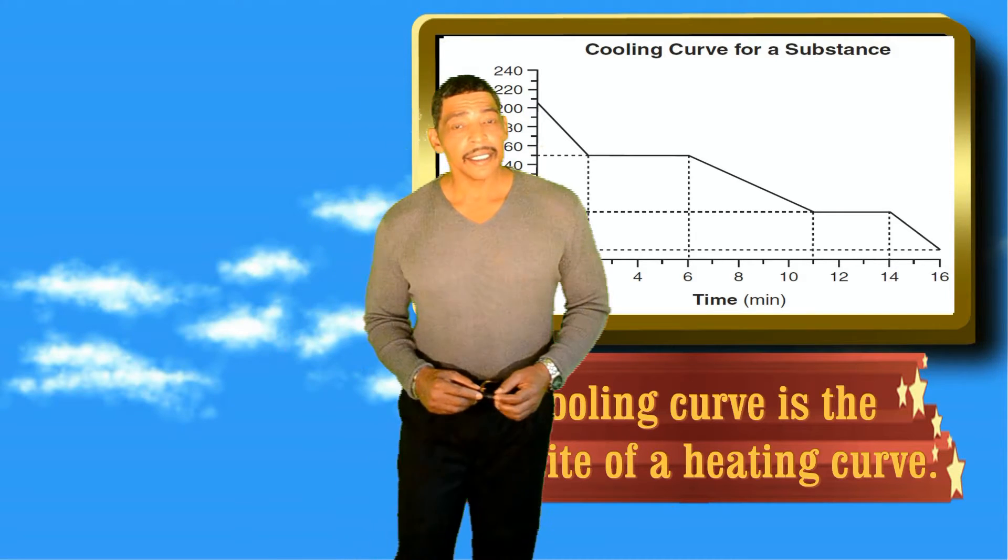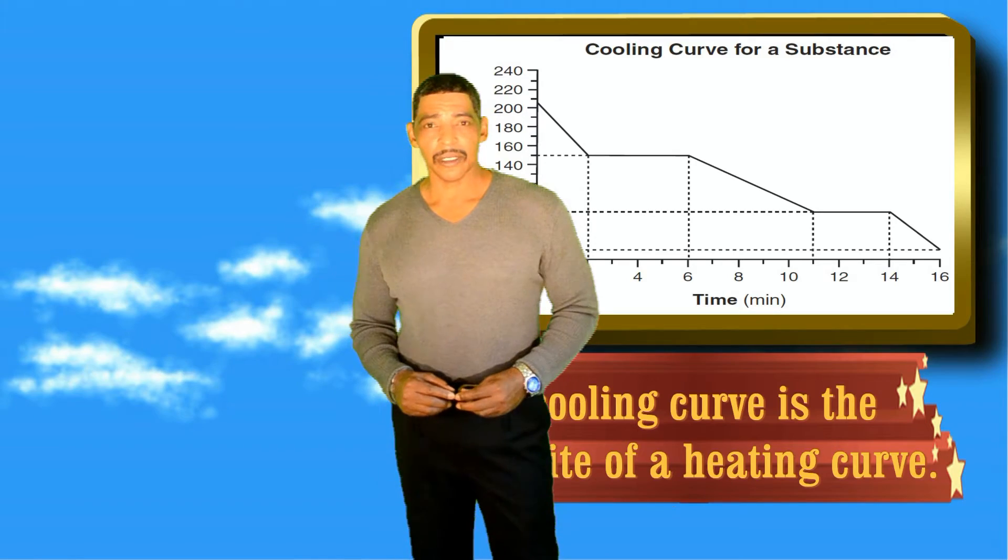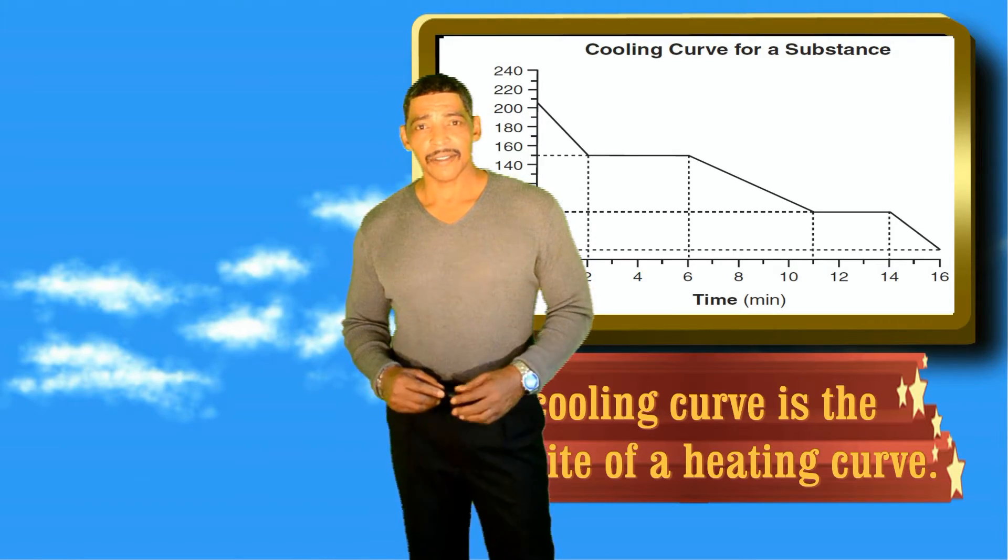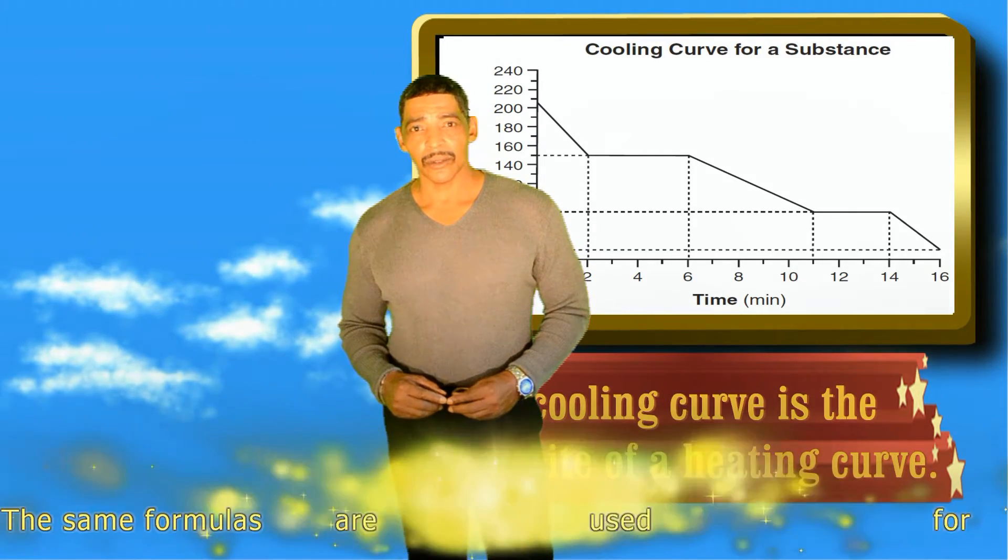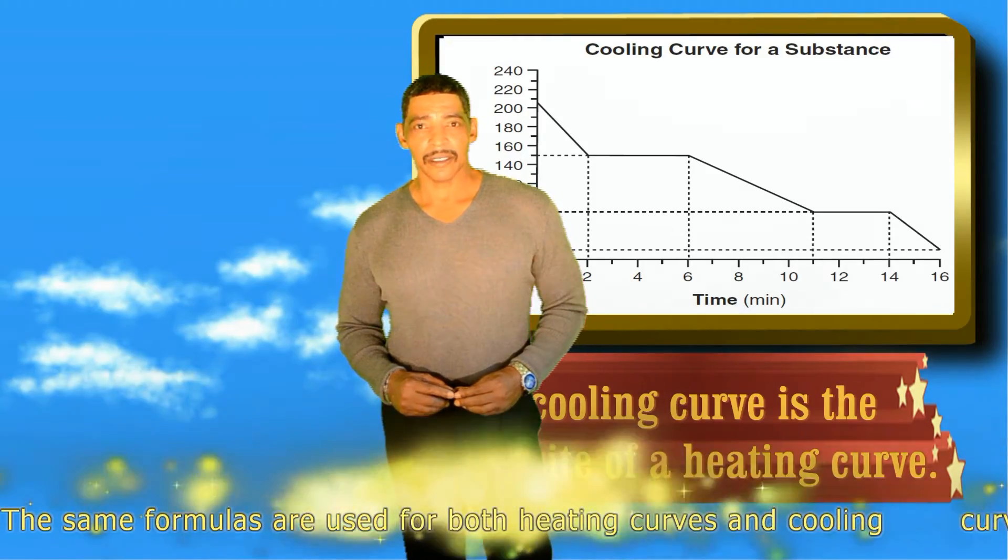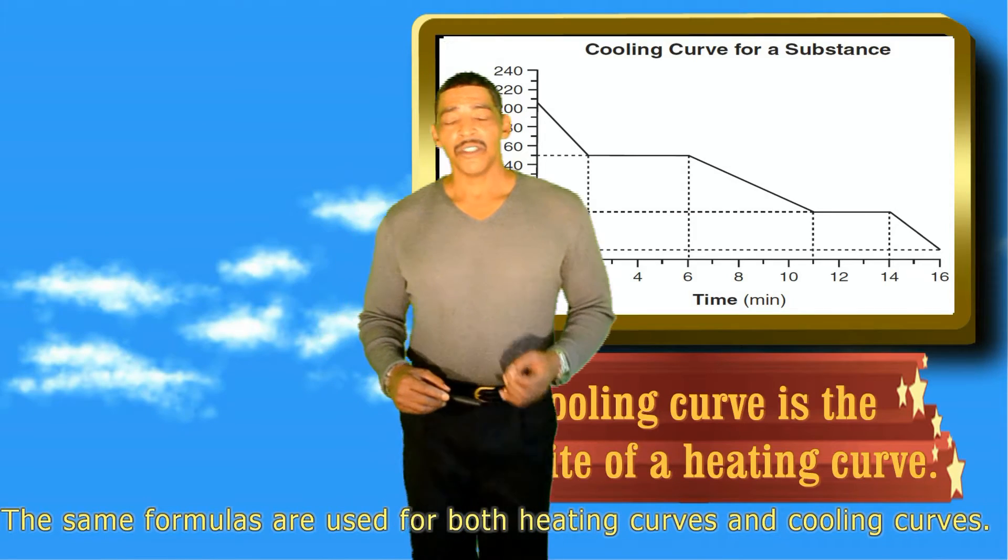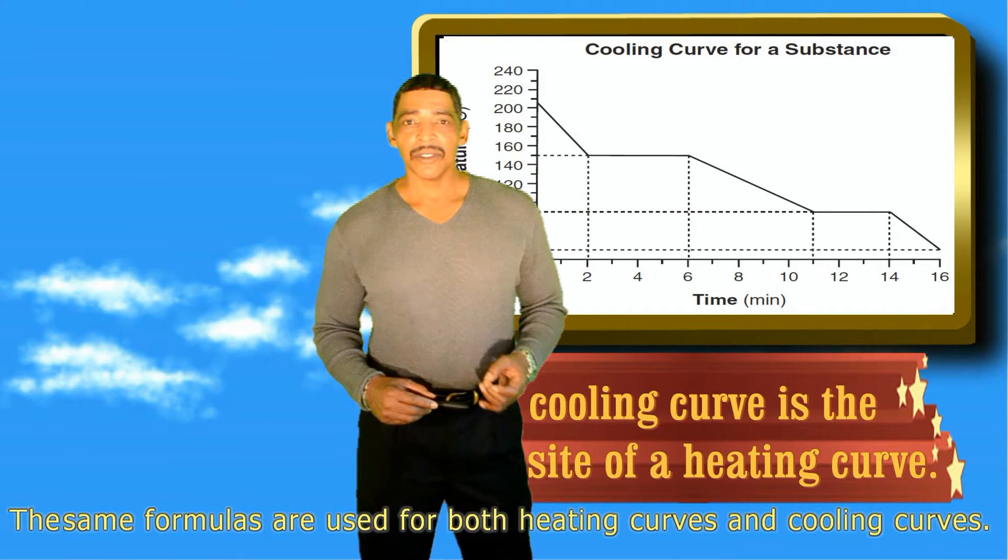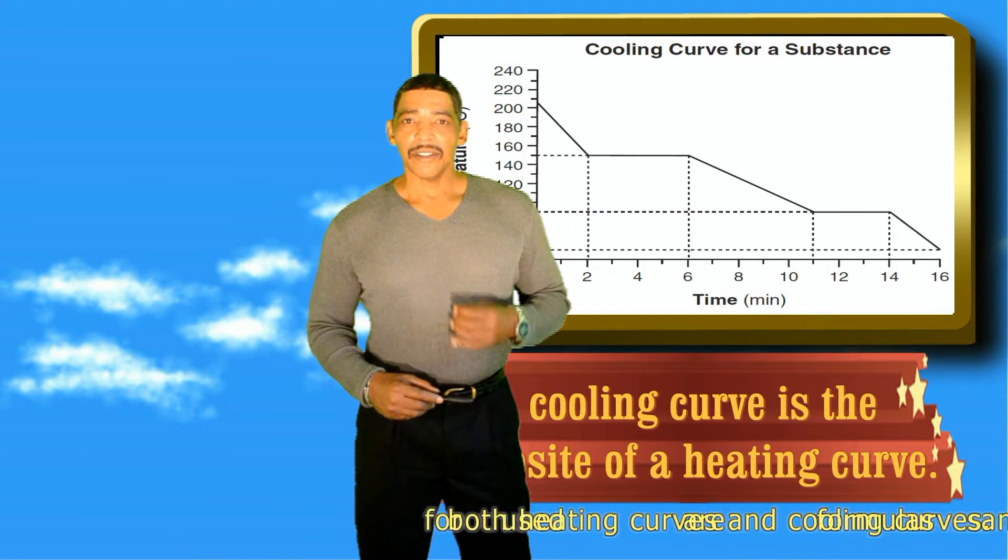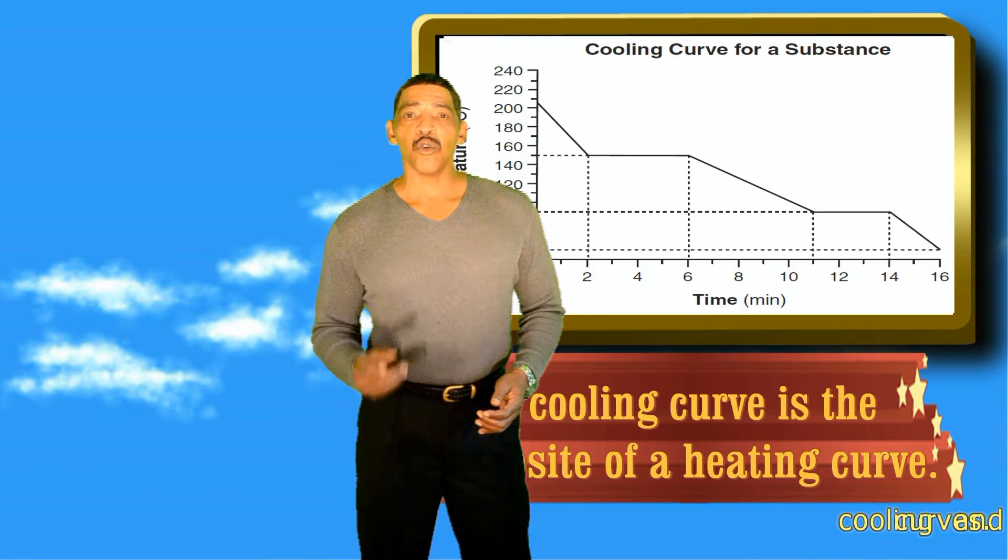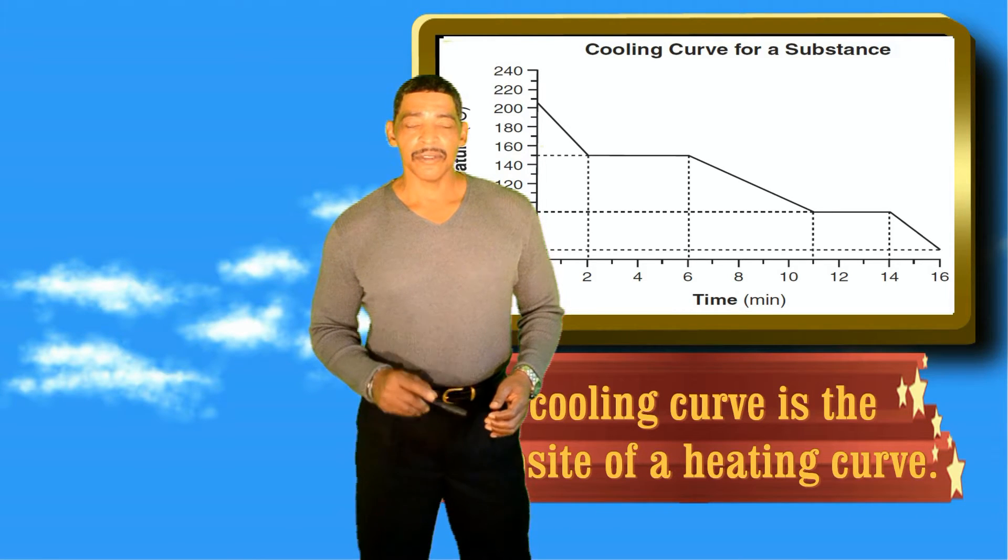The magnitude of any calculation related to a cooling curve will be exactly the same as the magnitude of the same calculation related to a heating curve. For example, the amount of energy released when a substance freezes is the same amount of energy absorbed when that same substance melts.